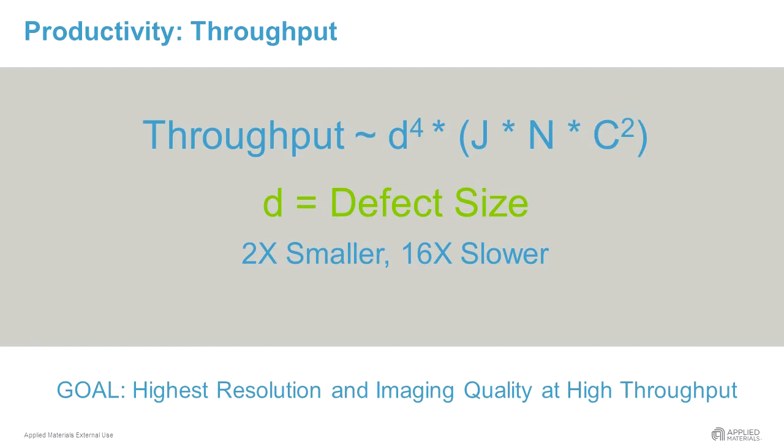We can see from the equation that if a defect is two times smaller then throughput will be typically sixteen times slower on the same system unless compensated for by advanced features of the inspection system.